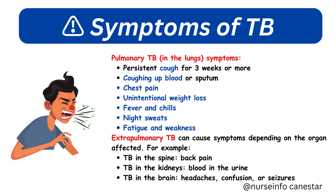Extrapulmonary TB can cause symptoms depending on the organ affected. For example, TB in the spine causes back pain; TB in the kidneys causes blood in the urine; and TB in the brain causes headaches, confusion, or seizures.